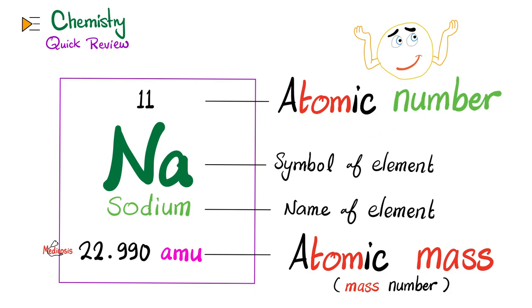The atomic number is the number of protons. It also happens to equal the number of electrons. Recall that protons are positively charged while electrons are negatively charged. Then we have neutrons, which are neutral.